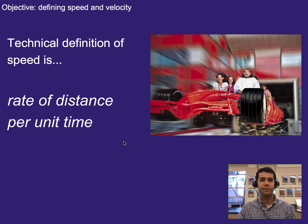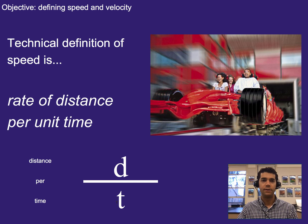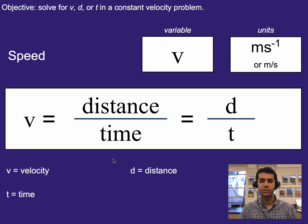The technical definition of speed is the rate of distance per unit time. If we break down that definition, we start with the idea of distance, or represented with d, per usually just means a fraction bar or ratio, and then unit time just means we have time underneath. So, distance per time, right there, just like that.